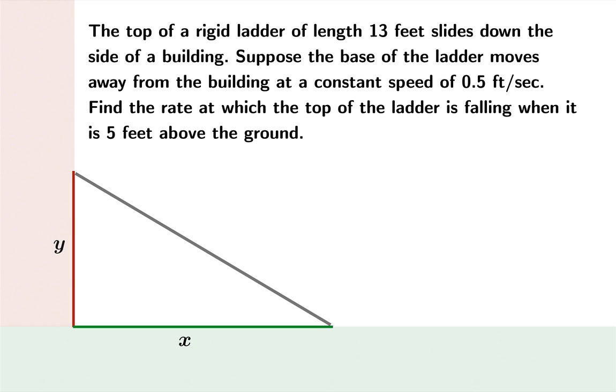We'll give some names to the sides and the hypotenuse. And now we'll try to translate all this information into succinct mathematical notation. Now, we're told that it's a rigid ladder and the length is 13 feet. What does that mean?